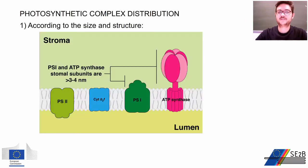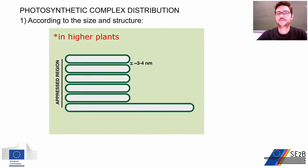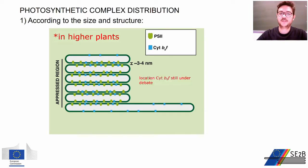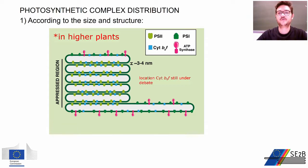If we consider the size and structure of the complexes, we see how PS2 and cytochrome B6F do not have any stromal subunit. But PS1 and ATP synthase both present a bulky stromal domain larger than 4 nm. Taking into consideration the size of the complexes and the distance between the appressed membranes, we can see how PS2 is present only in the appressed region, while cytochrome B6F is more homogeneously distributed. PS1 and ATP synthase are localized only in the non-appressed membrane because their stromal domains are too big to fit in the space between the membranes in the appressed region. This kind of distribution is called lateral heterogeneity.